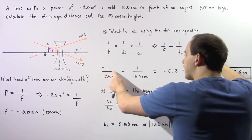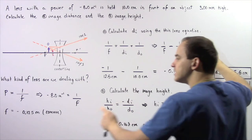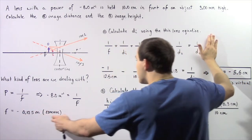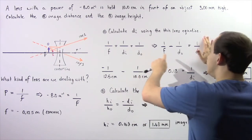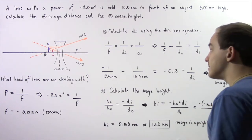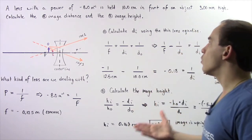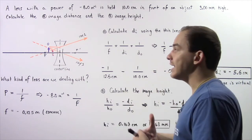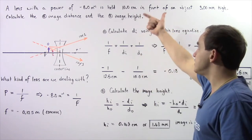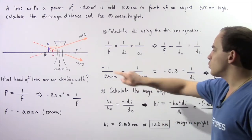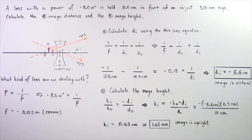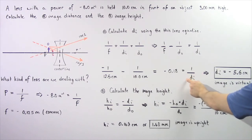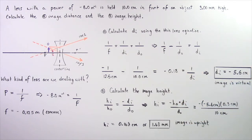We have negative 1 divided by 12.5 centimeters for the focal length, since we're dealing with a concave lens. The object is found on the left side of the lens — the same side as where the light originates — so the object distance DO is positive at 10 centimeters. So we have negative 1/12.5 minus 1/10, which gives us negative 0.18 equals 1/DI. Solving for DI gives us approximately negative 5.6 centimeters.